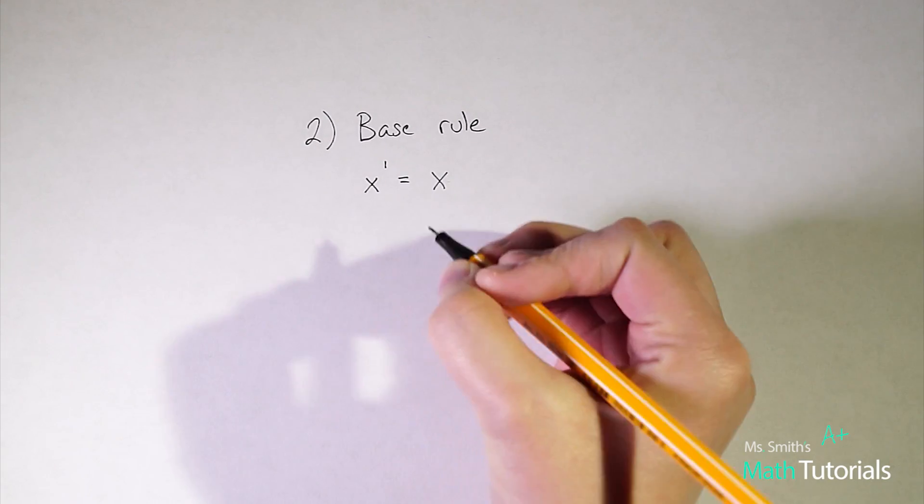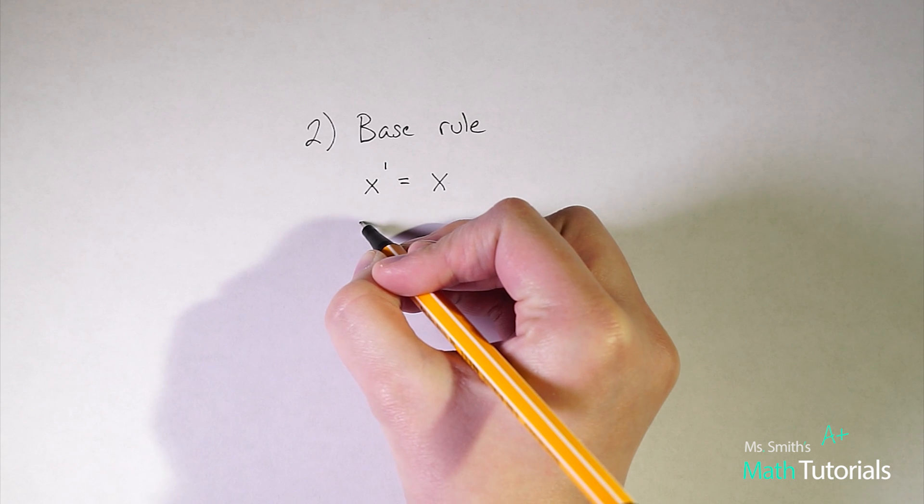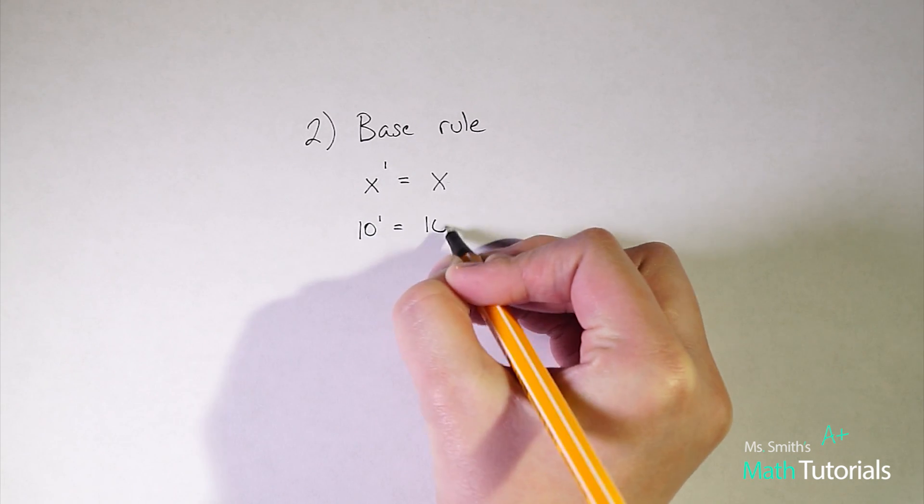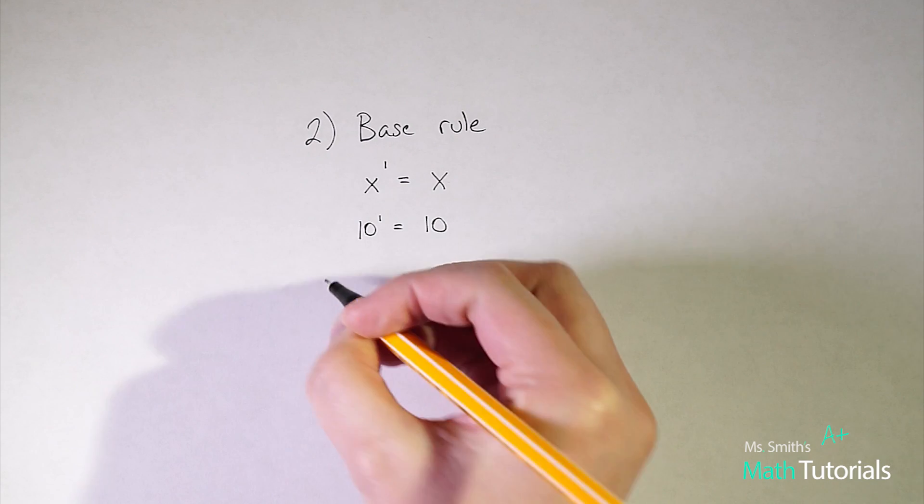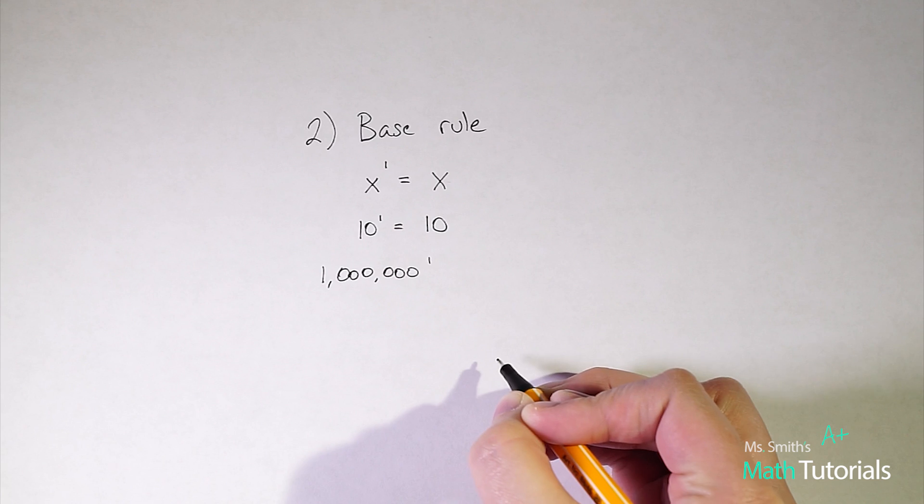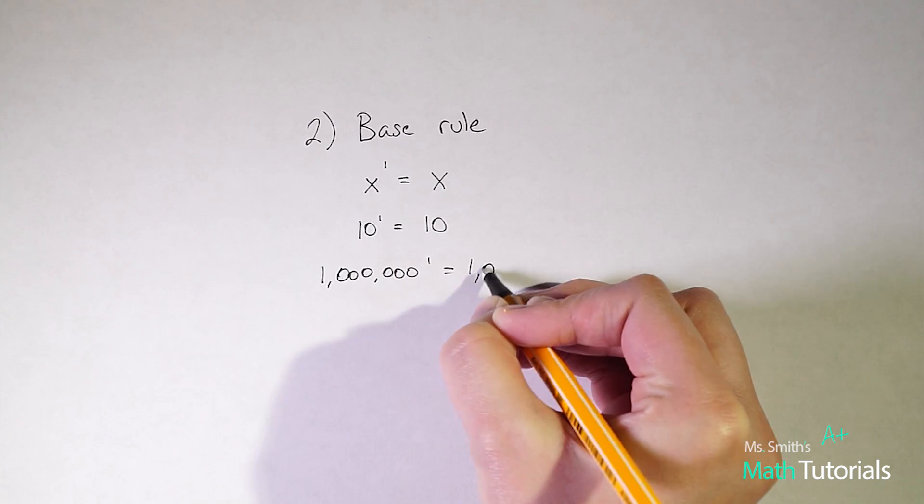This would move beyond two numbers. So if we had 10 to the power of one, our answer would just be 10. If we even had a million to the power of one, our answer is one million.